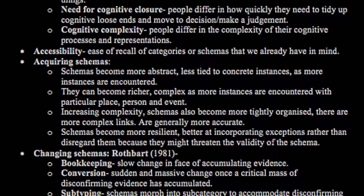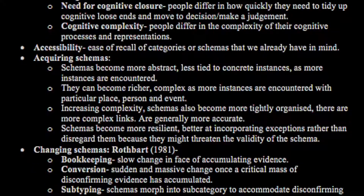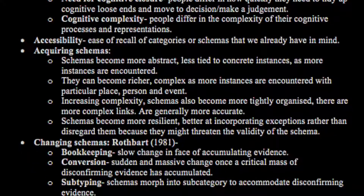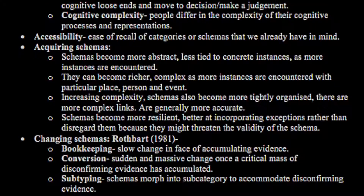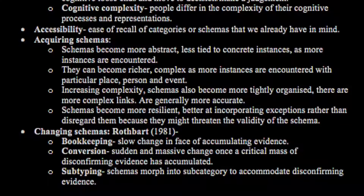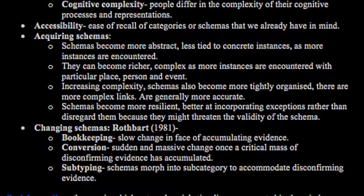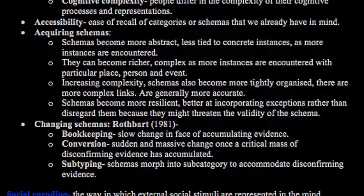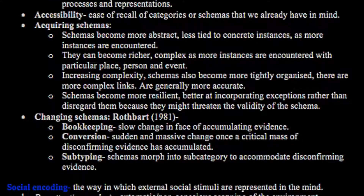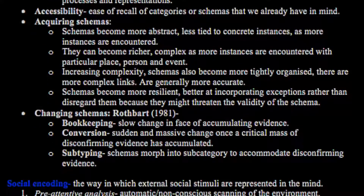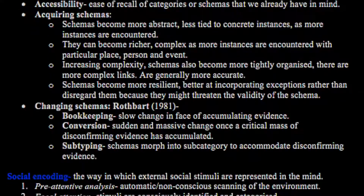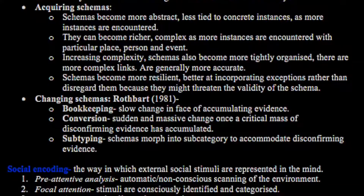Rothbart in 1981 discussed changing schemas, including bookkeeping — a slow change in the face of accumulating evidence — conversion, which is a sudden and massive change once a critical mass of disconfirming evidence has accumulated, and subtyping, where schemas morph into subcategories to accommodate disconfirming evidence.